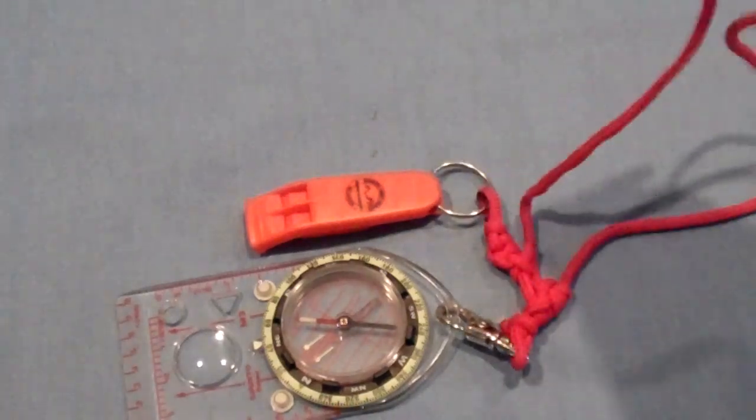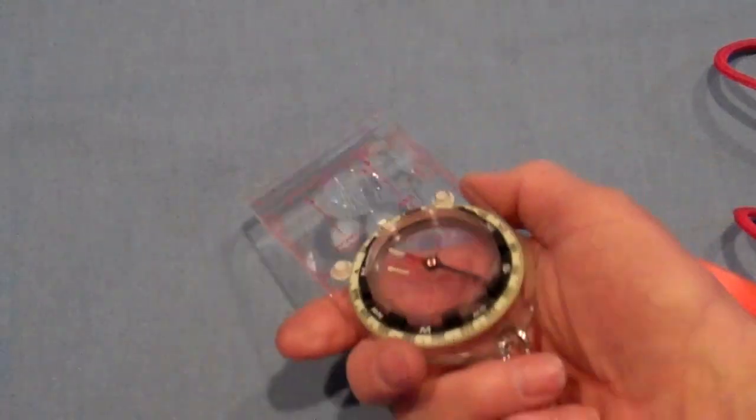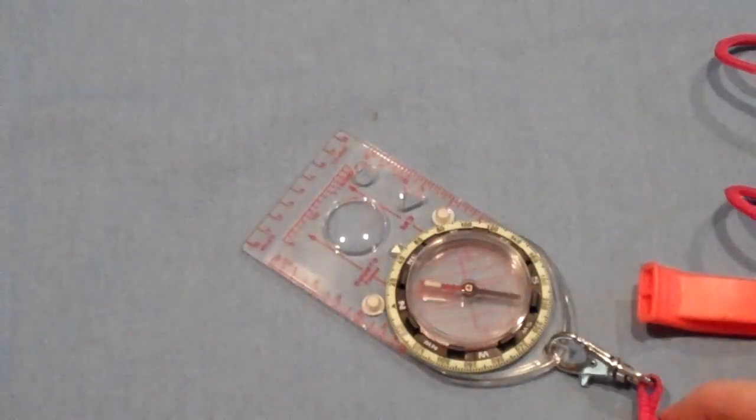If you get in the habit of putting the lanyard around your neck and stretching it out when you use your compass, you'll never have to worry about dropping, losing, or possibly breaking it.